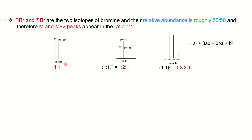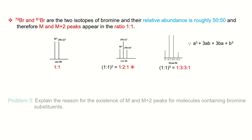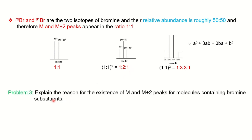In this way, by using these formulas and tricks, you can identify what type of halogen atom and how many halogen atoms are present by looking at the mass spectrum pattern. If the question asks: 'explain the reason for the existence of M and M+2 peaks for a molecule containing bromine,' you can explain based on its isotope that occurs in 50:50 natural abundance, giving a 1:1 ratio for M and M+2.